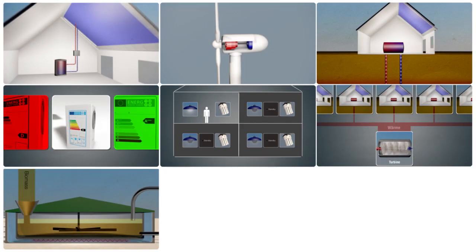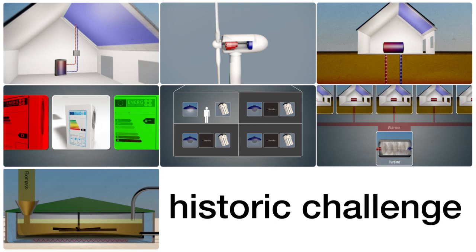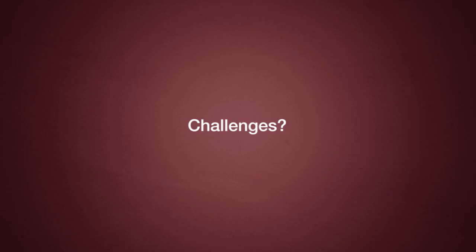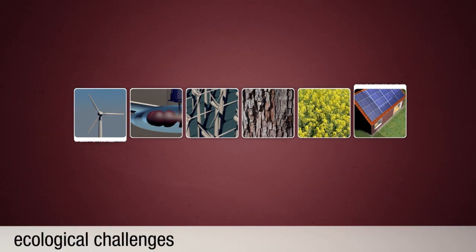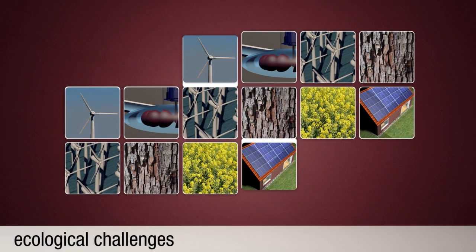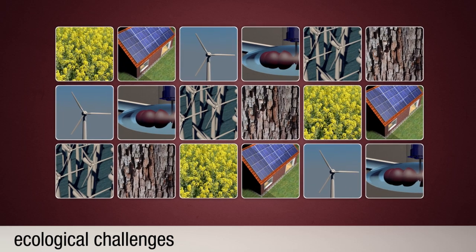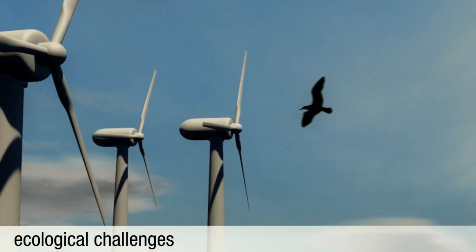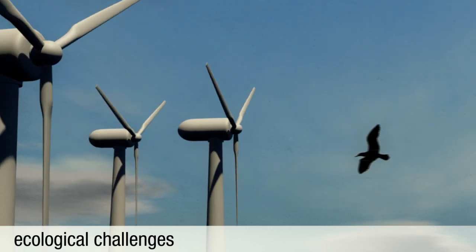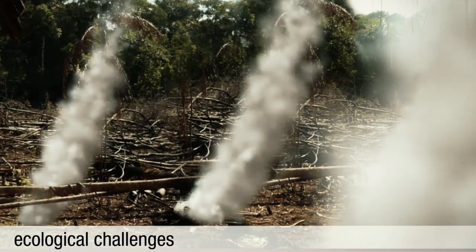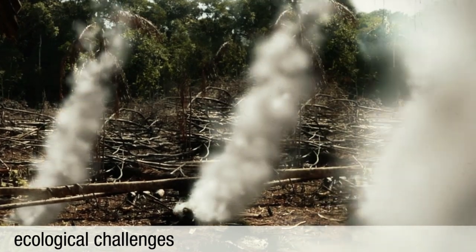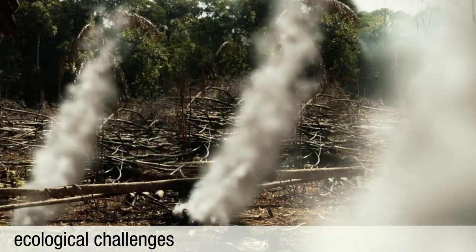The energy transition is a very complex challenge. What are the difficulties? The use of renewable energy can have negative ecological consequences. Occasionally, the interests of nature conservation conflict with the production of green power. Wind and hydroelectric power plants may damage the habitats of birds and fish. For the cultivation of energy crops, rainforests are cleared. This destroys valuable ecosystems and important natural carbon sinks and increases CO2 emissions.